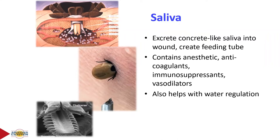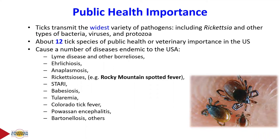Tick saliva is unique — like concrete before it sets, it forms a feeding tube and contains anesthetics, anticoagulants, immunosuppressants, and vasodilators to allow free flow of blood. It also helps in water regulation so ticks can concentrate nutrients. In the process of blood feeding, ticks transmit the widest variety of pathogens — even more than insects — including bacteria, viruses, and protozoans. In the US there are about 12 tick species of public health or veterinary importance.